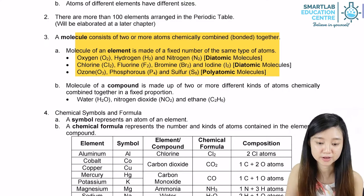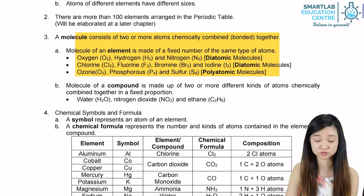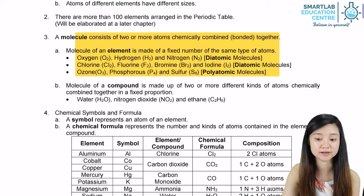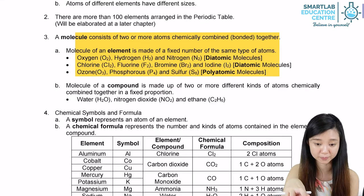For example, we have oxygen, hydrogen, and nitrogen. They exist as O2, H2, and N2. So they are actually two of the same type of atoms chemically combined.